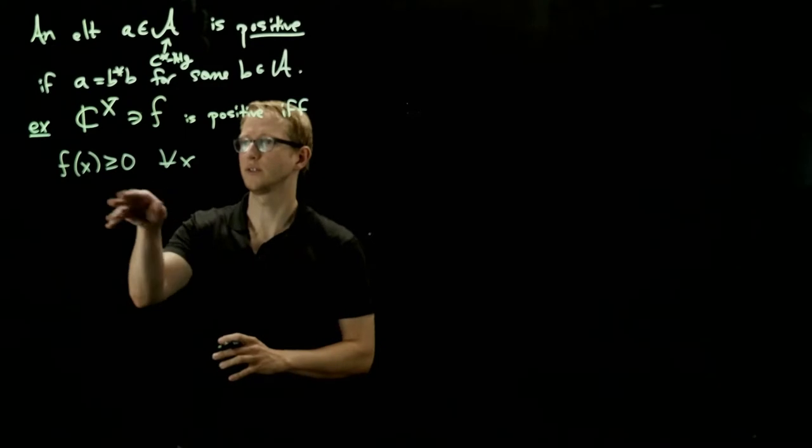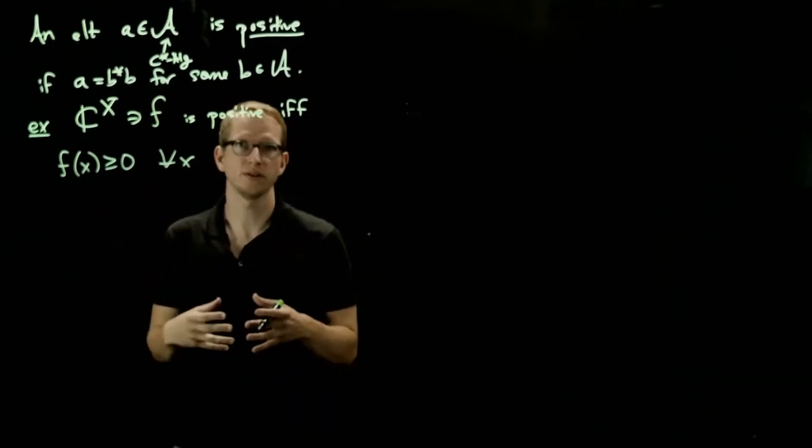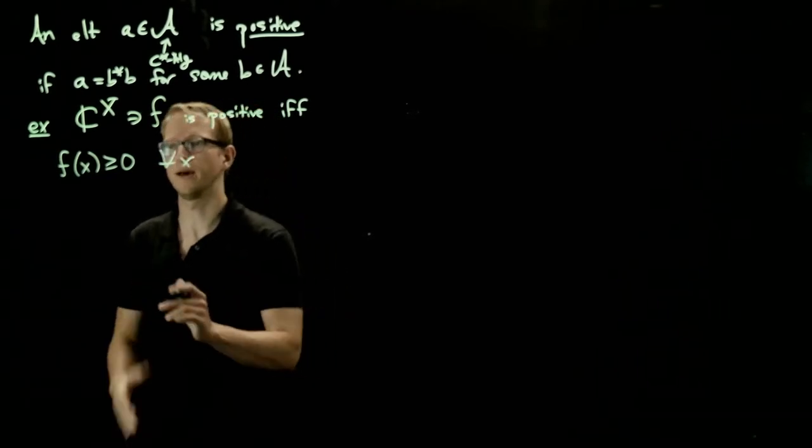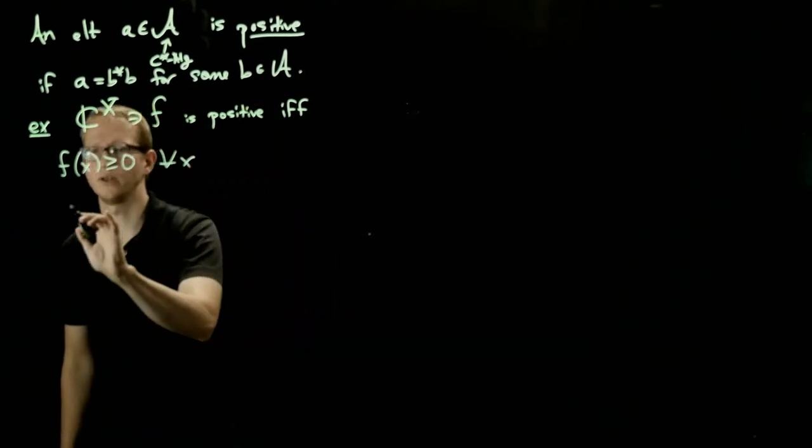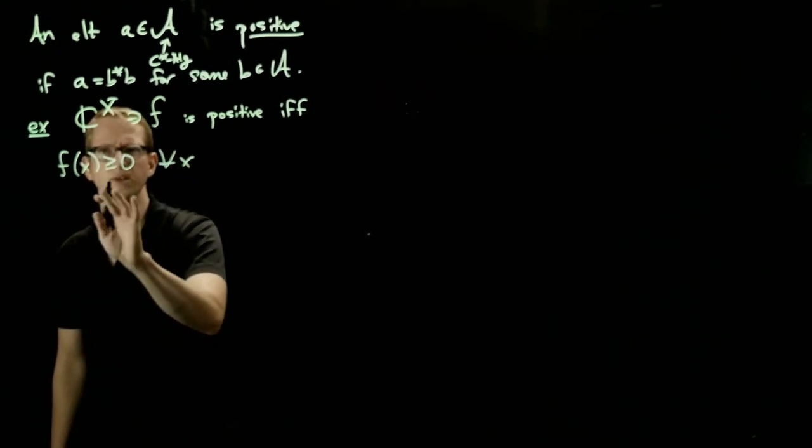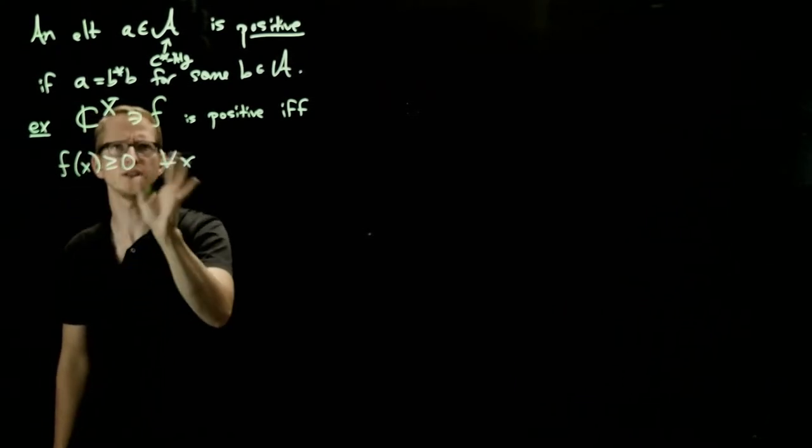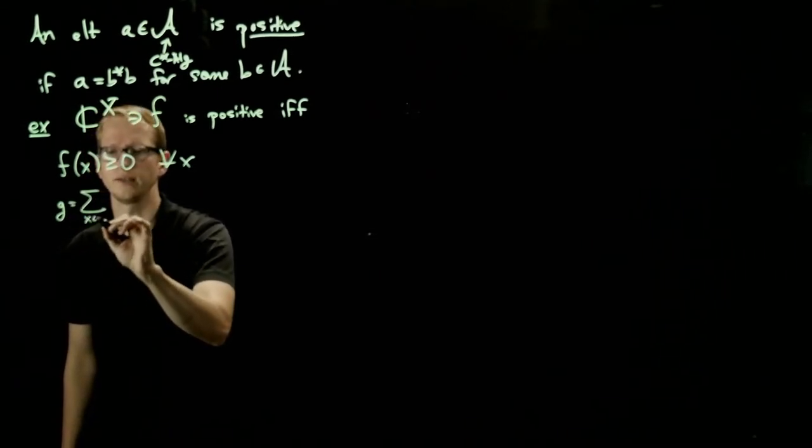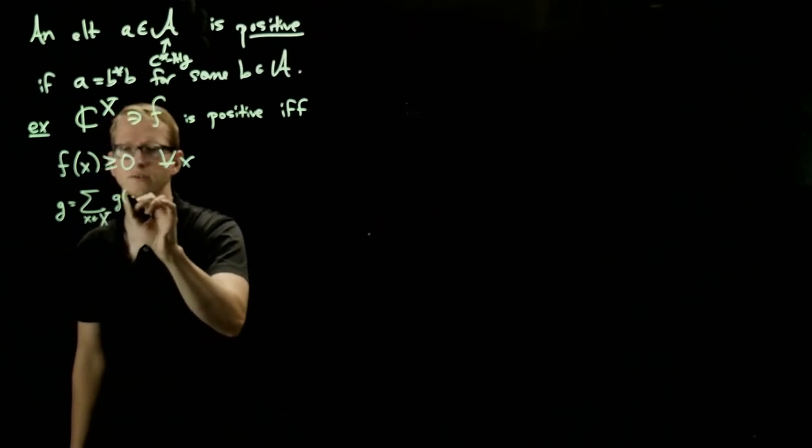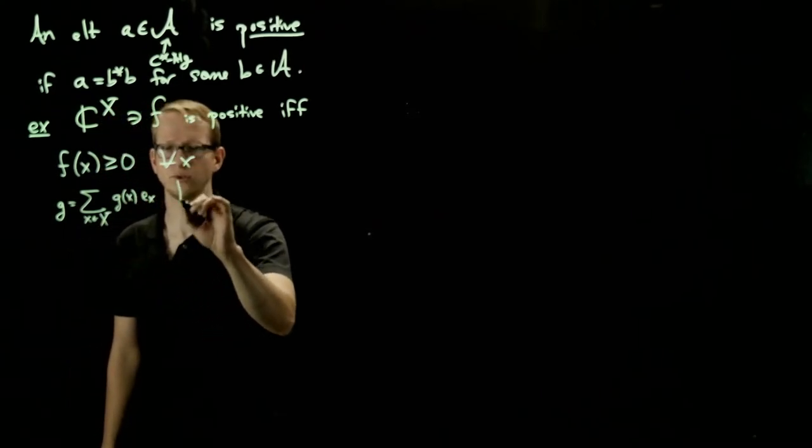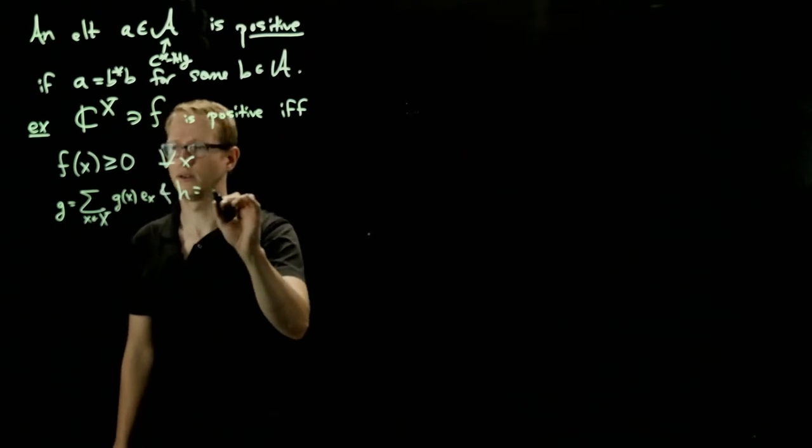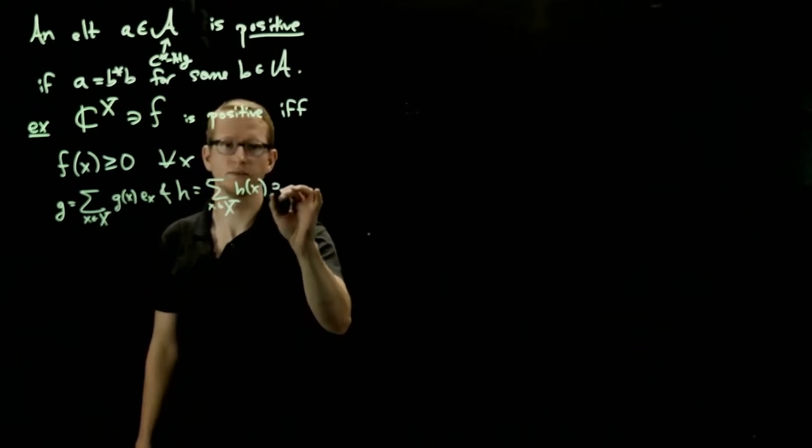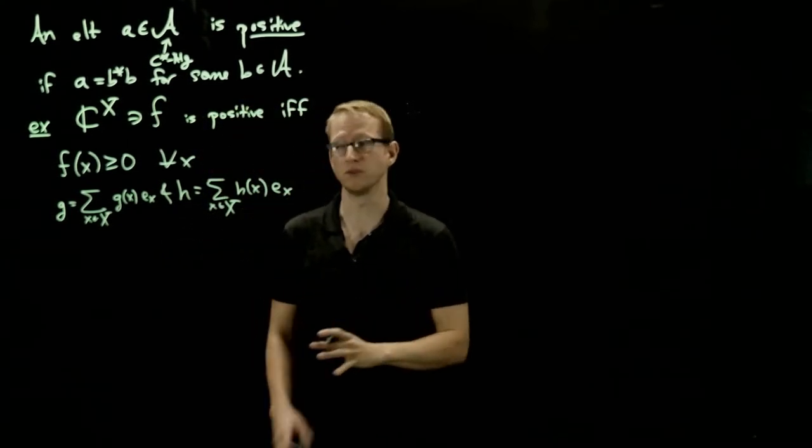Now it's very interesting to see why this all works out, and it's going to allow us to think about how we can actually multiply two different functions and see what happens in terms of their representation. So let's say I take two functions, let me not use F because I've already used it here. Let's say G and H. So G and H are two functions, which we can write as G of X, E_X, and H as a sum over all elements in X, H of X, E_X. Now what happens when we multiply these two functions?